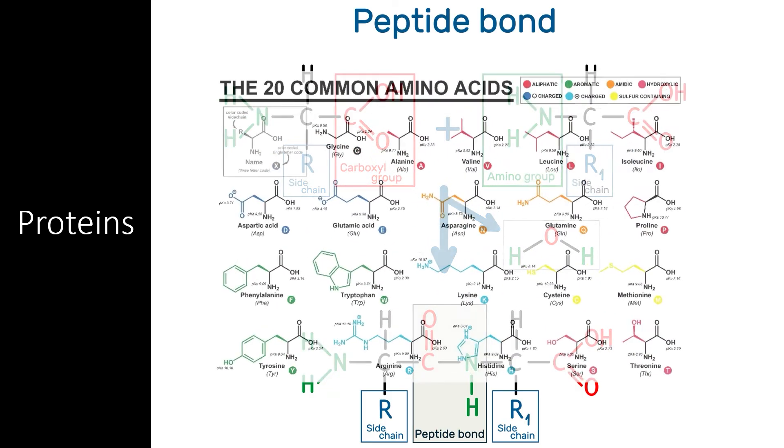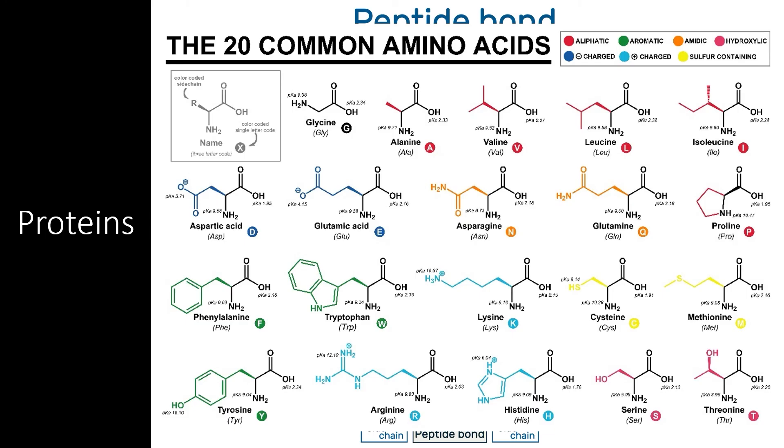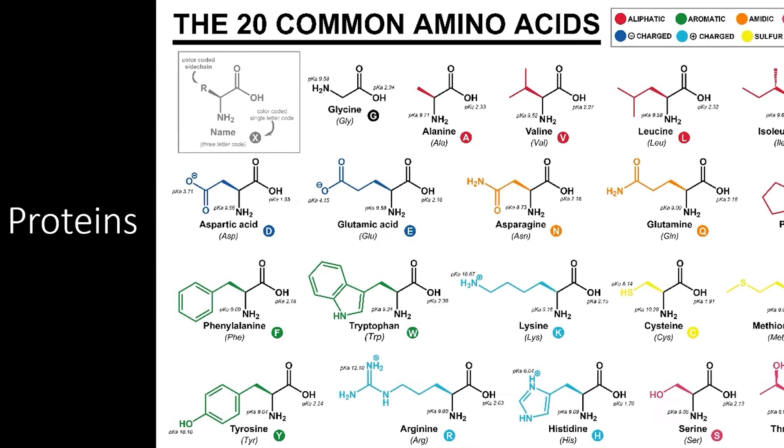There are around 20 common amino acids in nature, differing only by the molecules found in their side chains. These side chains react in unique ways to create the structure of proteins.